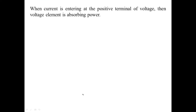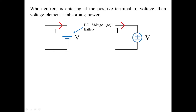When current is entering at the positive terminal of the voltage, then the voltage element is absorbing power. Here you can see the direction of current coming towards the voltage source. This type of power is called absorbing power. It is called voltage or a battery, and when you see a circle with plus and minus, it indicates a DC source voltage.